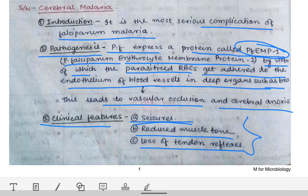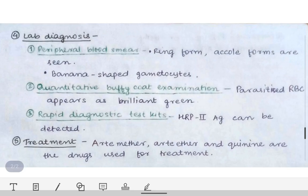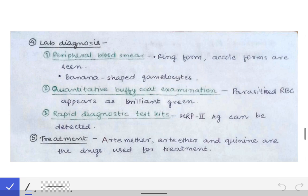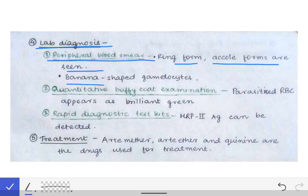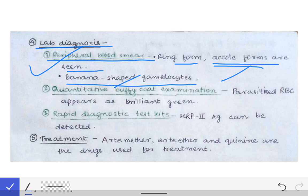For lab diagnosis of cerebral malaria, we first collect a peripheral blood smear where we can detect the ring form, specifically the accolé form. The accolé form is especially very important for the diagnosis of Plasmodium falciparum. Other than that, banana-shaped gametocytes are also sometimes helpful in confirming the diagnosis of Plasmodium falciparum.